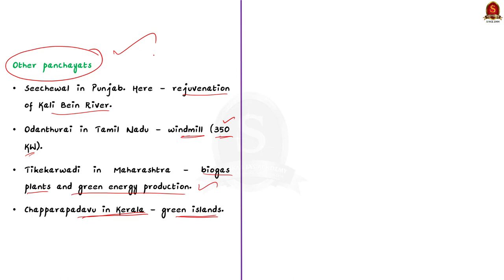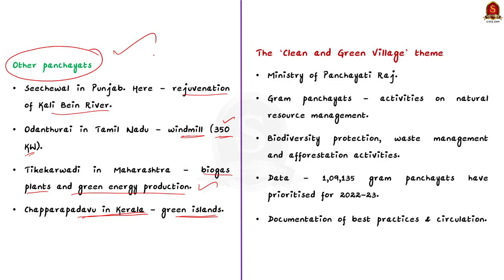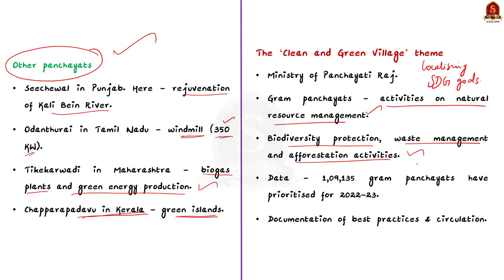Let's briefly see about the Clean and Green Village theme. In an attempt at localizing the Sustainable Development Goals, the Ministry of Panchayati Raj introduced the clean and green village theme. Under the theme, Gram Panchayats can take up activities on natural resource management, biodiversity protection, waste management, and deforestation activities. According to the latest data, around 1 lakh gram panchayats have prioritized clean and green village as one of their focus areas for 2022-23. The Ministry advocates for the documentation of best practices, which will be widely circulated across India.